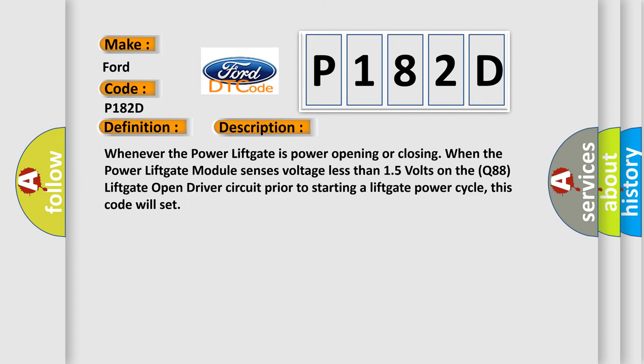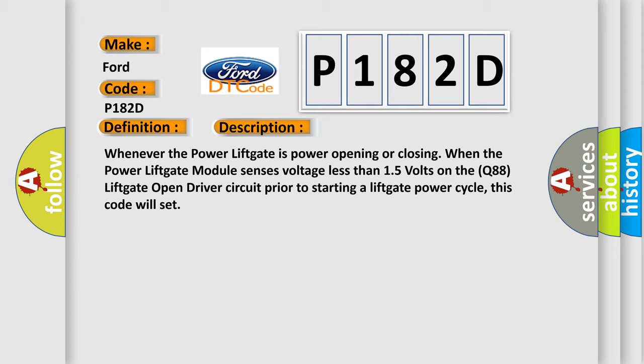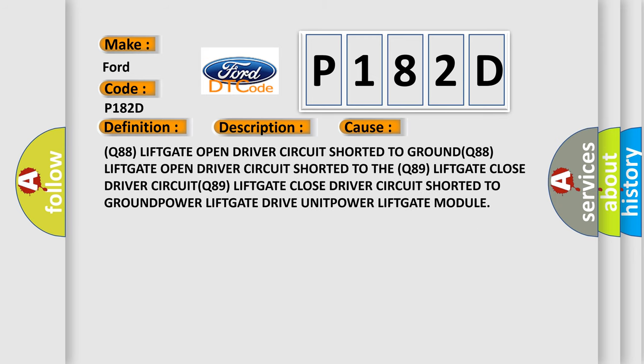Whenever the power liftgate is power opening or closing, when the power liftgate module senses voltage less than 15 volts on the Q88 liftgate open driver circuit prior to starting a liftgate power cycle, this code will set. This diagnostic error occurs most often in these cases: Q88 liftgate open driver circuit shorted to ground; Q88 liftgate open driver circuit shorted to the Q89 liftgate close driver circuit; Q89 liftgate close driver circuit shorted to ground; or a faulty liftgate drive unit or power liftgate module.